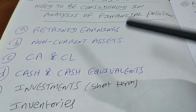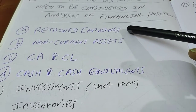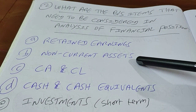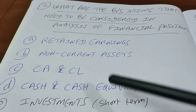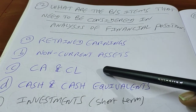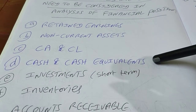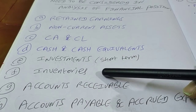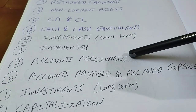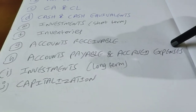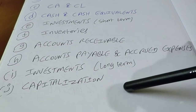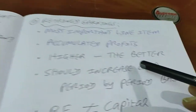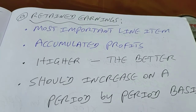The key line items to look for in the balance sheet are: first, retained earnings; then non-current assets; current assets and current liabilities; cash and cash equivalents; short-term investments; inventories; accounts receivable; accounts payable and accrued expenses; long-term investments; and finally, the capitalization of the firm.